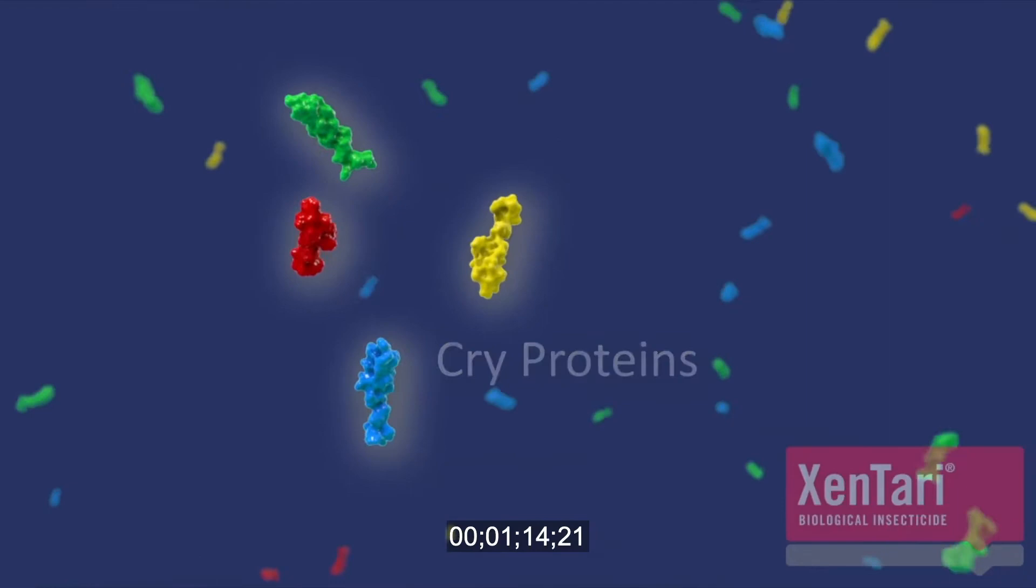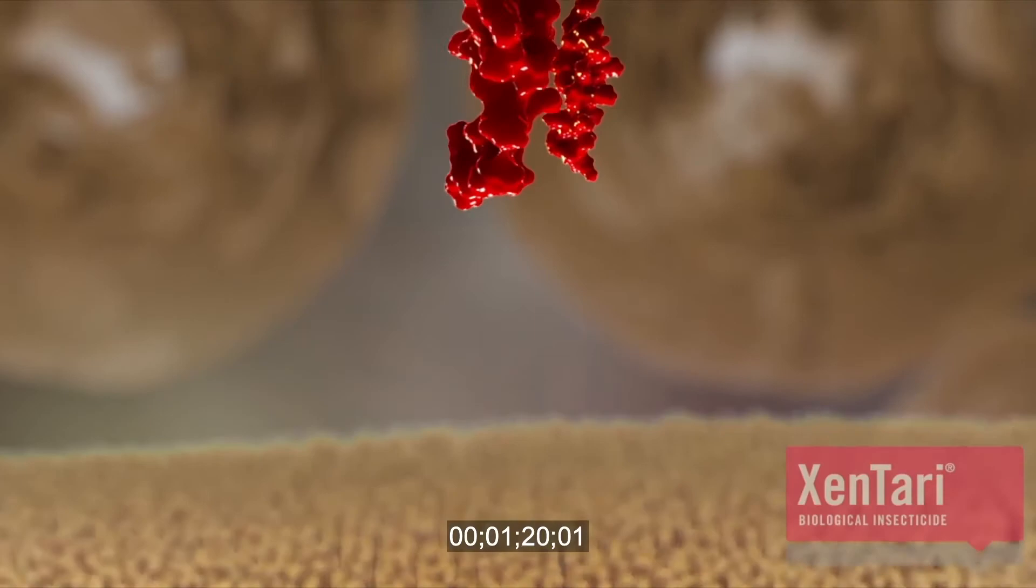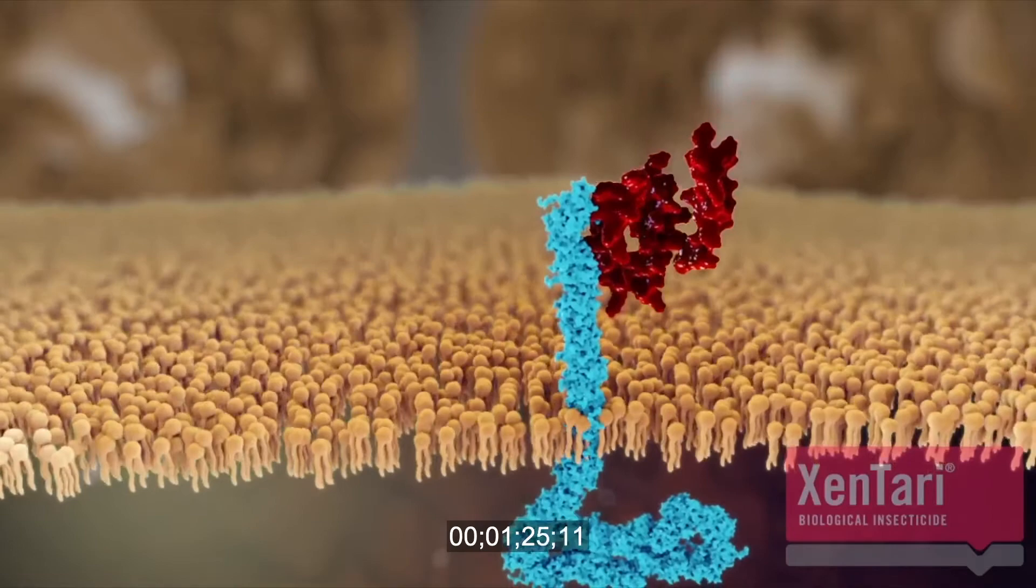Cry proteins bind to specific receptors on cells lining the midgut and insert into the cell membrane, forming pores and quickly stopping feeding.